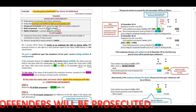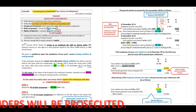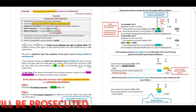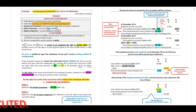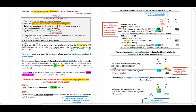On 1 January 20.11, Compt Limited granted an employee the right to choose either: option one — 800 phantom shares (the right to a cash payment equal to the value of 800 shares), or option two — 900 actual shares. The cash portion we recognize as the cash settled debt component, and the actual shares as the equity component.